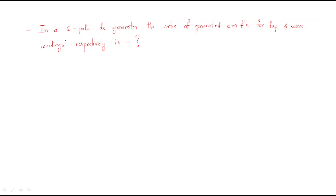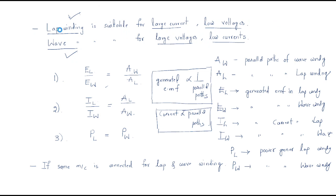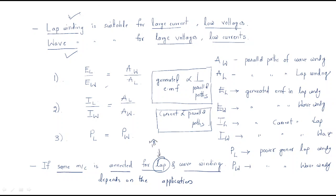Hello everyone, in this session we will discuss some problems regarding lap winding and wave winding. From the last session, the statement is: if the same machine is connected for lap and wave winding, it depends on the application. In lap winding it requires more current, but if you want more voltage, the lap can be converted into wave winding to get more voltage. So one machine can be operated for both lap winding as well as wave winding.